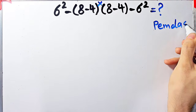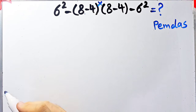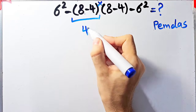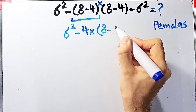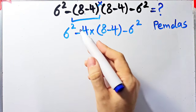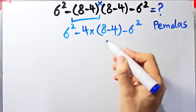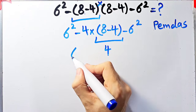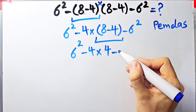According to the PEMDAS rule, first we simplify the parentheses. Inside the first parenthesis we have 8 minus 4, which equals 4. Now the question is: 6² minus 4, times (8 minus 4), minus 6². We simplify the second parenthesis as well: 8 minus 4 equals 4. Now we have 6² minus 4 times 4, minus 6².